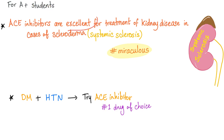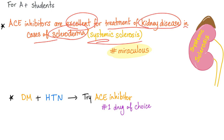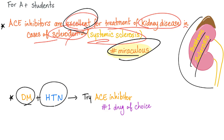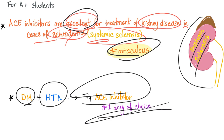Some pro tips: ACE inhibitors are excellent — I mean truly miraculous — for treatment of kidney disease in cases of scleroderma, now called systemic sclerosis. They are really good for nephropathy due to systemic sclerosis. Also, if you have a patient with both diabetes and hypertension, ACE inhibitors are your first drug of choice, because they treat hypertension and are good for diabetic nephropathy — two birds with one stone.